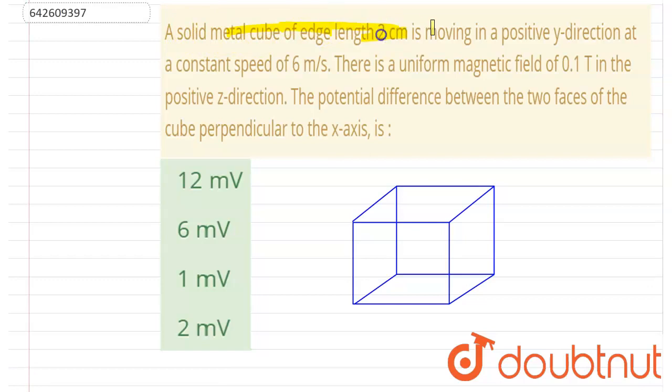of edge 2 centimeters is moving in positive y direction at a constant speed of 6 meters per second. There is a uniform magnetic field of 0.1 tesla in positive z direction. The potential difference between the two faces of the cube perpendicular to the x-axis is: